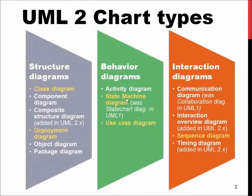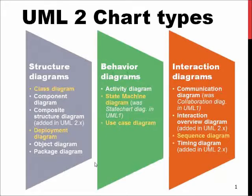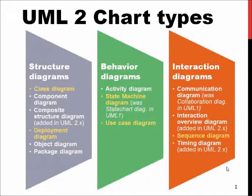UML actually has several different ways to describe how our system will look when development is done. There's a division between structure diagrams, behavioral diagrams, and interaction diagrams, which define the mechanical or technical structure of the system, how the system is expected to behave when used, and how the system is expected to interact with other components or systems.